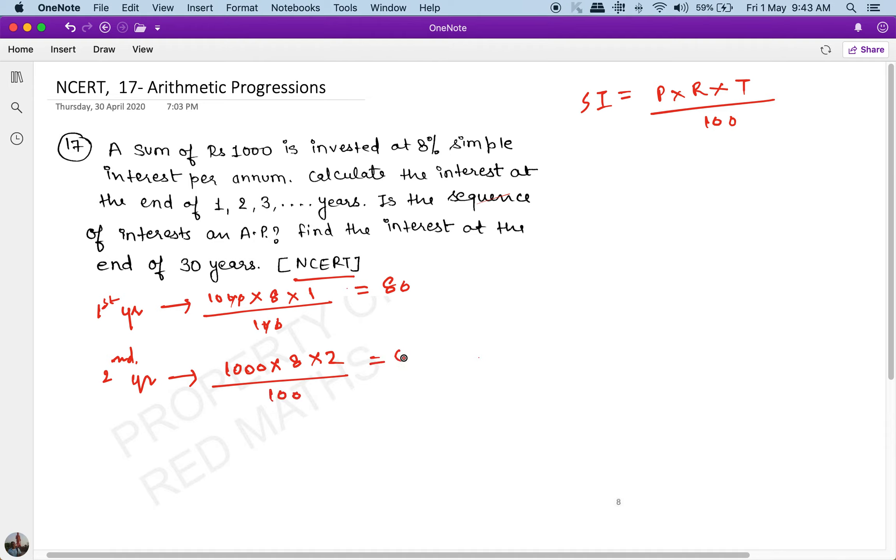The interest at the end of the third year is equal to 1000 × 8 percent × 3 years / 100, and this is going to be 240. Okay, so every year the interest is increasing by 80 rupees.